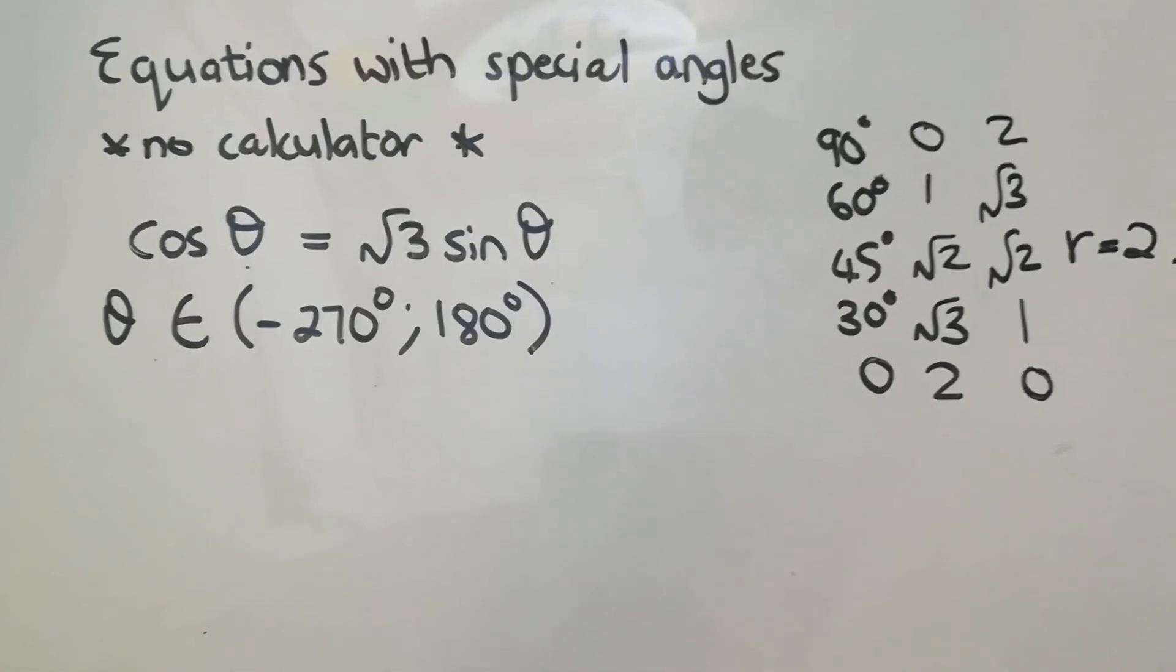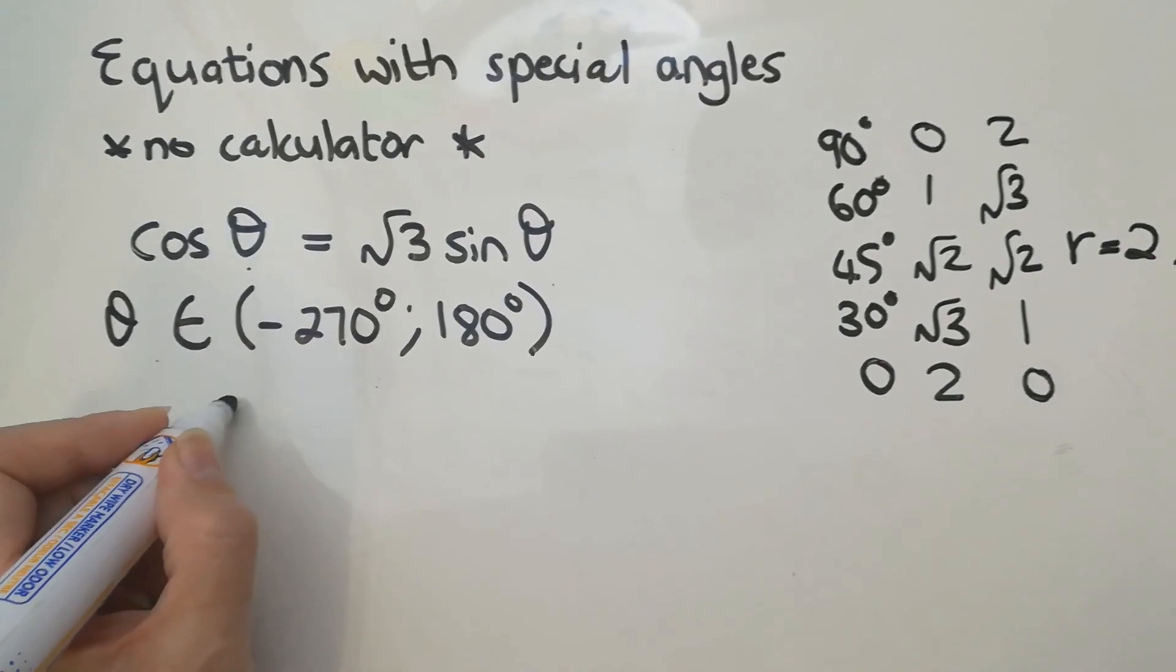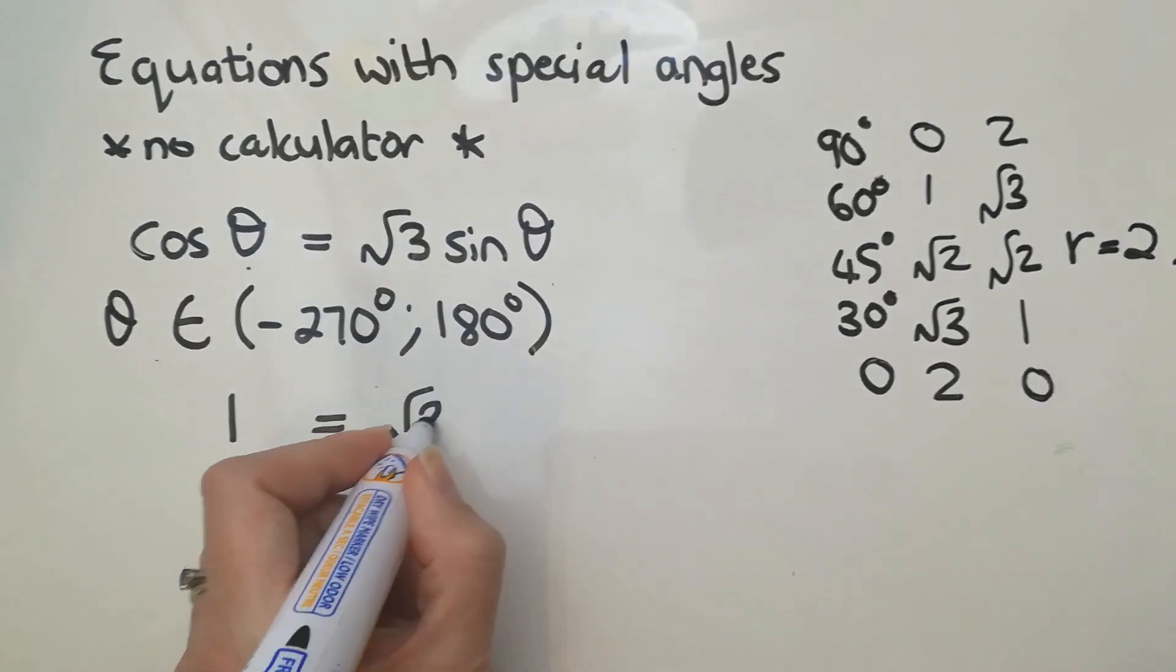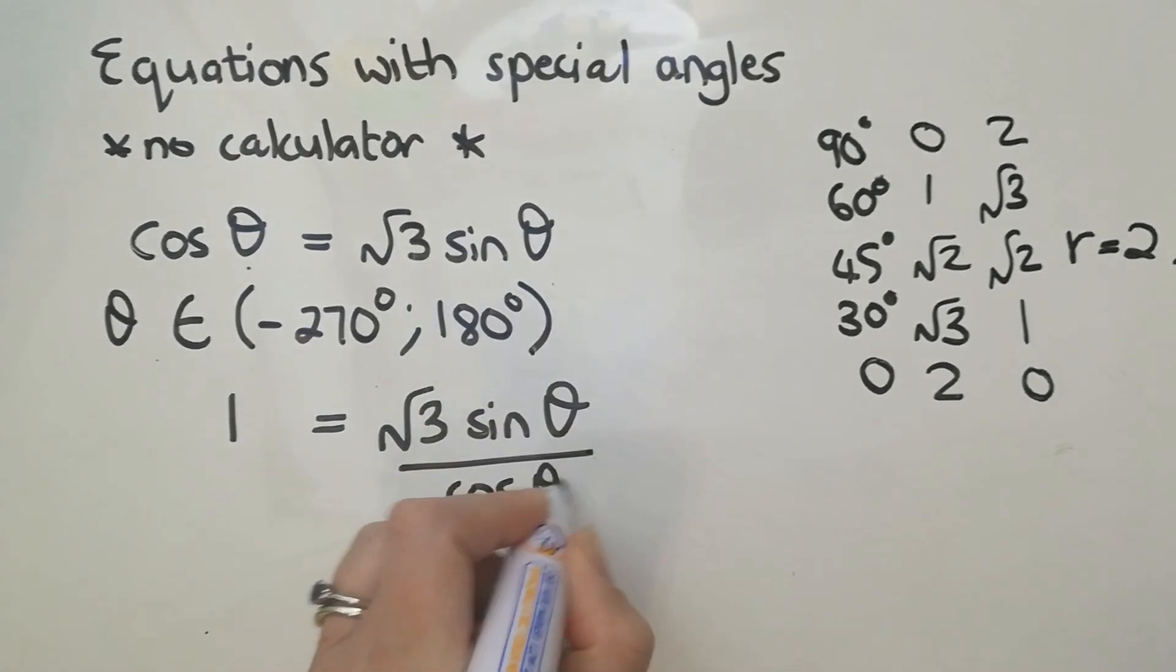Okay, so I'm going to do that. Cos theta over cos theta will give me 1. And this thing will give me, just going to add in a step. Okay, and that then goes to a tan. So now I've got 1 equals root 3 tan theta.